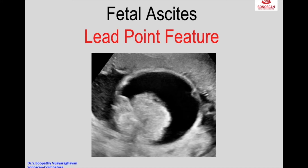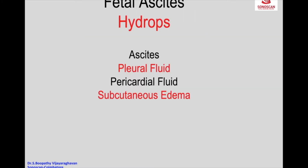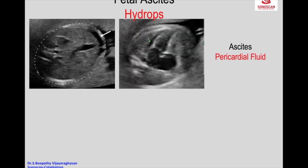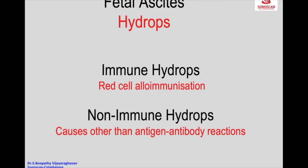Fetal ascites is a lead point feature in the fetus. Once you see fetal ascites, consider diagnosis of hydrops, and there can also be associated placentomegaly and polyhydramnios. These are the features of hydrops fetalis. Here you see minimal fetal ascites and there is minimal pericardial fluid. There is a big list of non-immune hydrops.